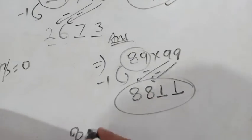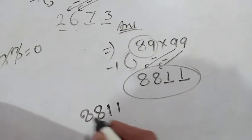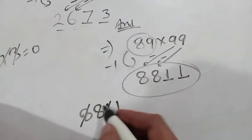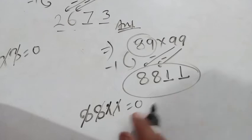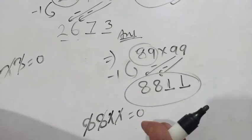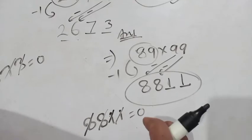Same thing. 8 8 1 1. 8 plus 1, again 9. 8 plus 1, again 9. So we have also check our digit, our answer is correct or not.